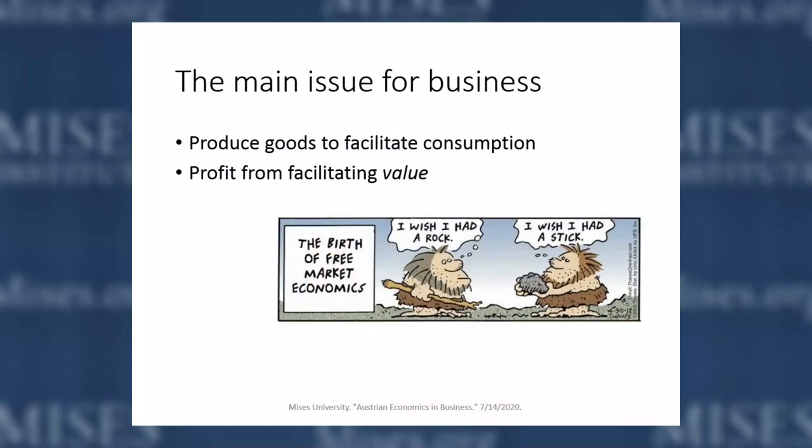So for us the main issue for business — which happens to be the same as in practice — is to produce goods that facilitate consumers' consumption. Because through consumption we satisfy wants, and thereby we become better off. The whole point of production is to get something that is consumable. And for the business itself, the point is to make a profit out of facilitating value for consumers. I'm putting all my own or borrowed resources at risk, producing something for someone else, hoping this will create enough purchasing power for me so I can buy stuff and satisfy my own wants. Very indirect, but that's how the economy works. We facilitate this through exchange and trade.